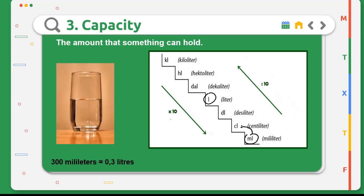We can convert from milliliters to liters. We go up three steps, so we divide 300 by 1000. Because one step, we divide by 10. Three steps, we divide by 1000. So 300 milliliters equals 0.3 liters.